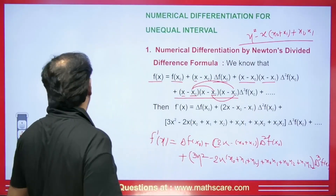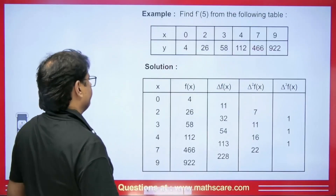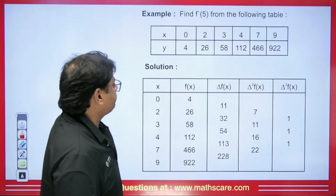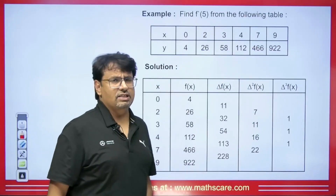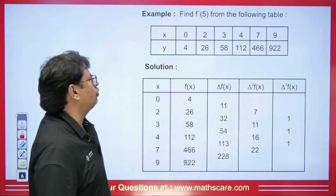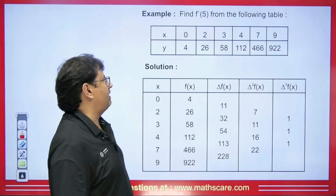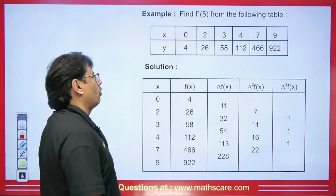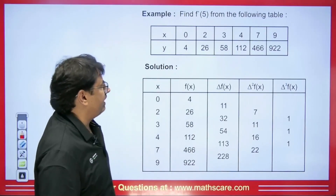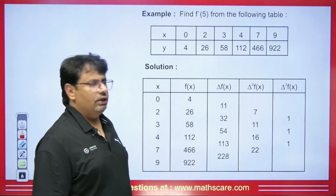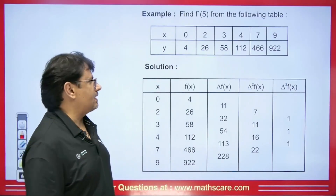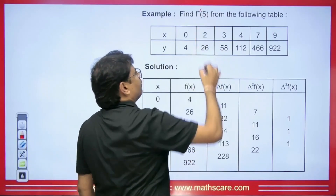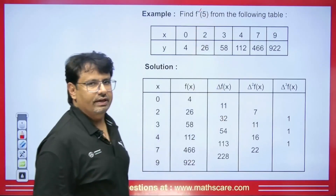Let's see the question. We have x = 0, 2, 3, 4, 7, 9 and y values given as 4, 26, 58, 112, 466, 922. We are being asked: what will be the value of f'(5)? Normally, to calculate f'(5), we can use Newton divided difference since we need to find the derivative at x = 5.